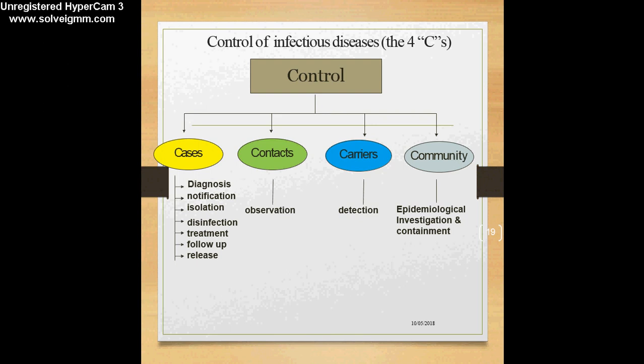For the community, in order to control an infectious disease, what is important is an epidemiological investigation as well as containment. Containment refers to stopping the epidemic or the outbreak which has occurred in the community.